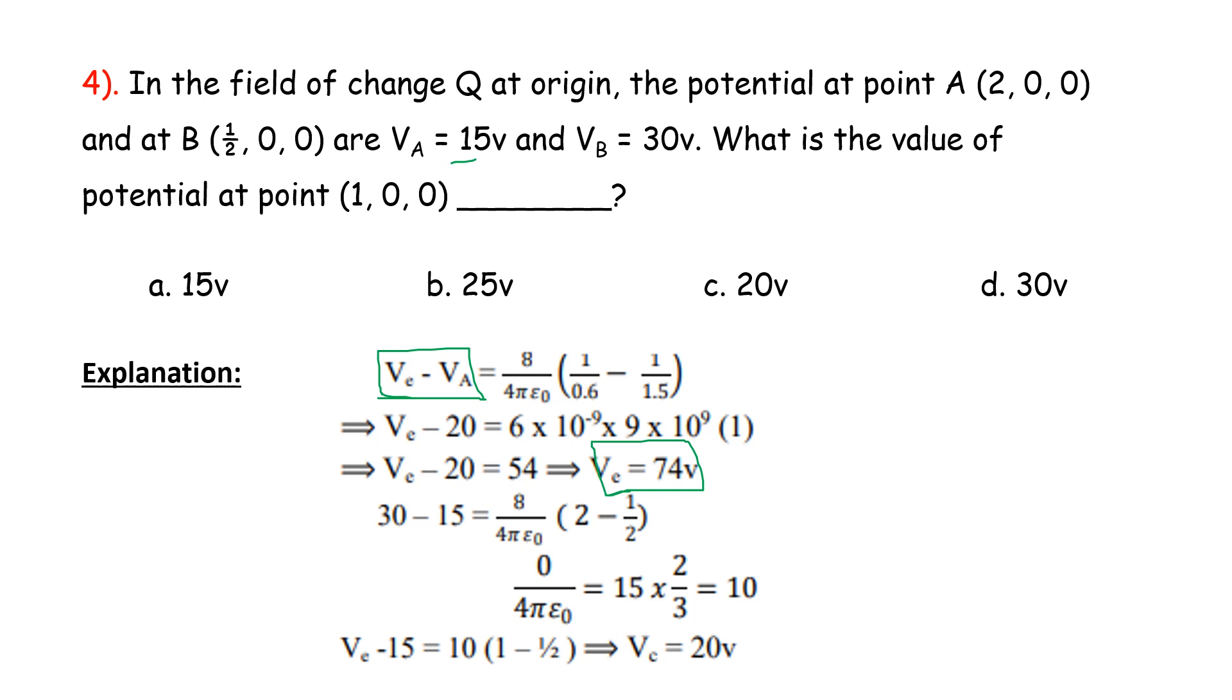So from Q equals divided by value we can put it. Substitute divided by 4 pi epsilon naught into 2 minus 1/2. So Q divided by 4 pi epsilon naught equals 15 into 2/3. In this case, 10 equals 10 into 1 minus 1/2. VC value is 20V.